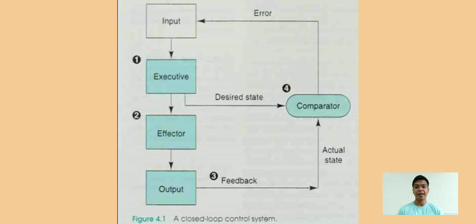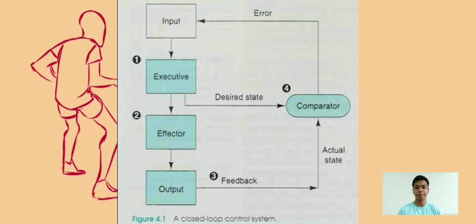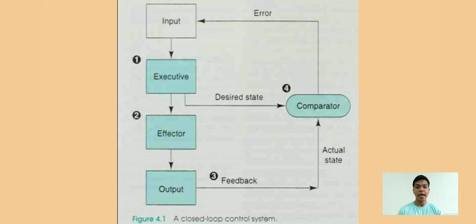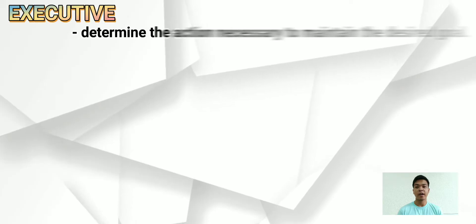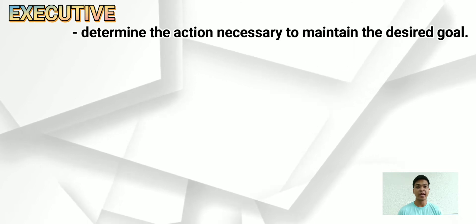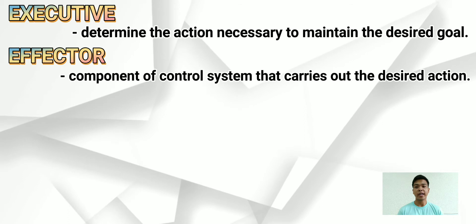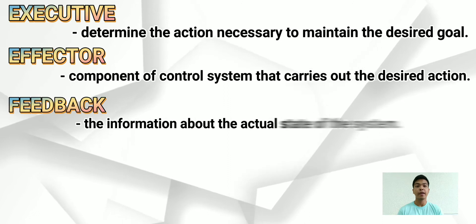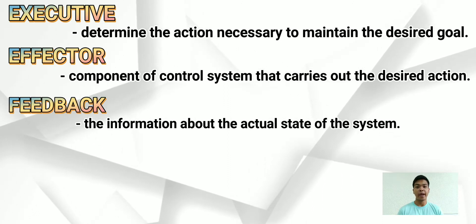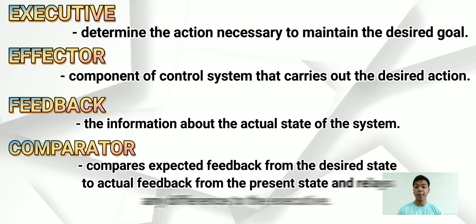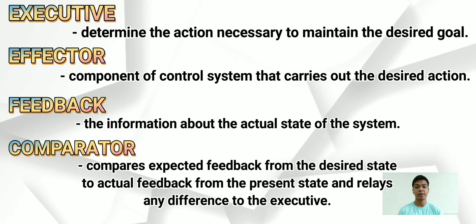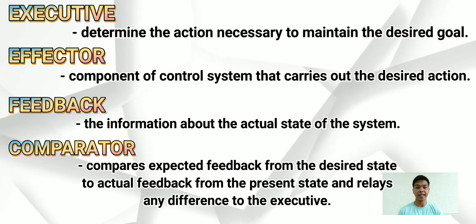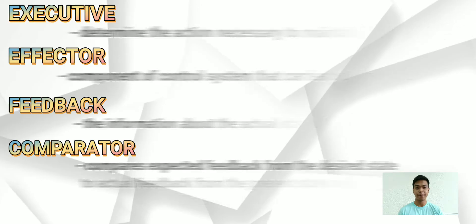In this diagram, it shows all actions that must occur. First, we have the input, which is the stimulus that you hear or see that makes us start to move. Then the executive determines the action necessary to maintain the desired goal. The effector is the component of the control system that carries out the desired action. Feedback, on the other hand, is the information about the actual state of the system. And the comparator, or error detection mechanism, compares expected feedback from the desired state to actual feedback from the present state, and relays any difference to the executive.